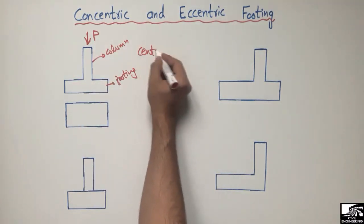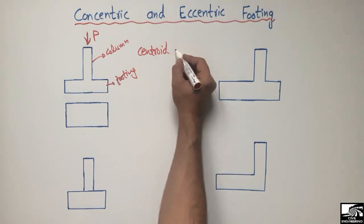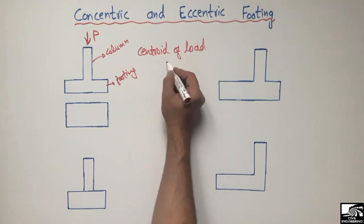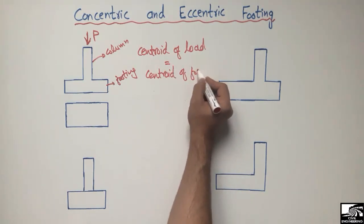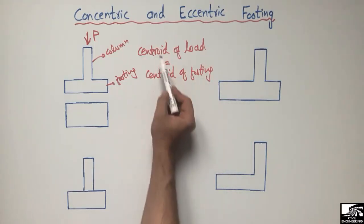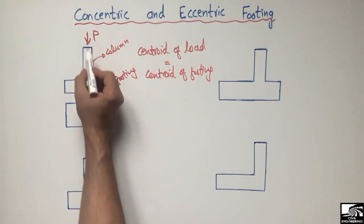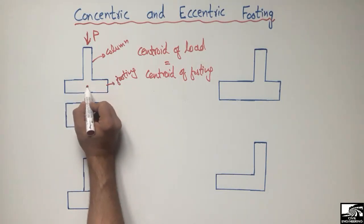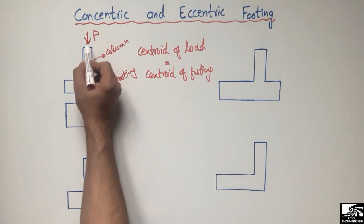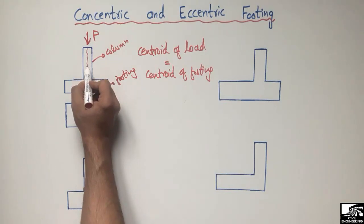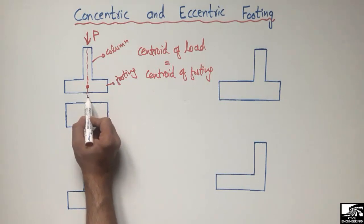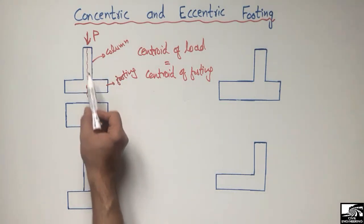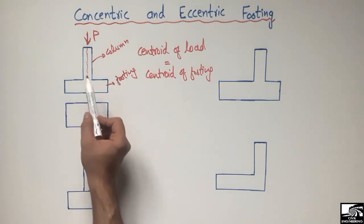So we can write it here: when the centroid of load equals, or coincides with, the centroid of footing, this type of footing is called the concentric footing. We can see here that this footing has a center, represented by a circle. The load centroid is exactly on this center, so both centroids coincide with one another. We call this type of footing the concentric footing.